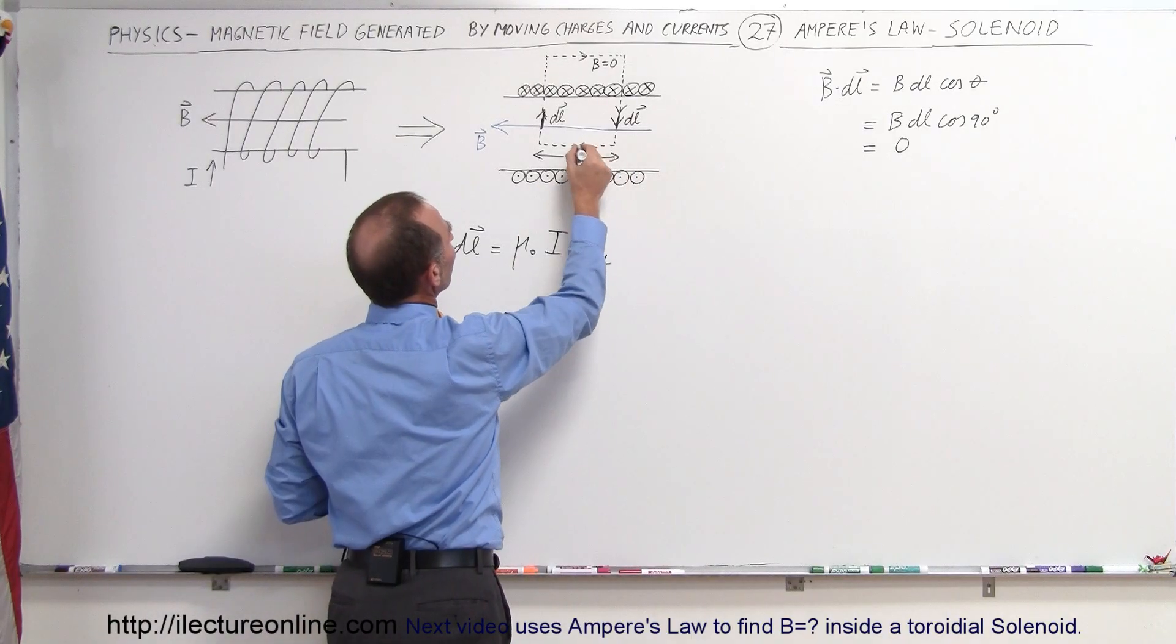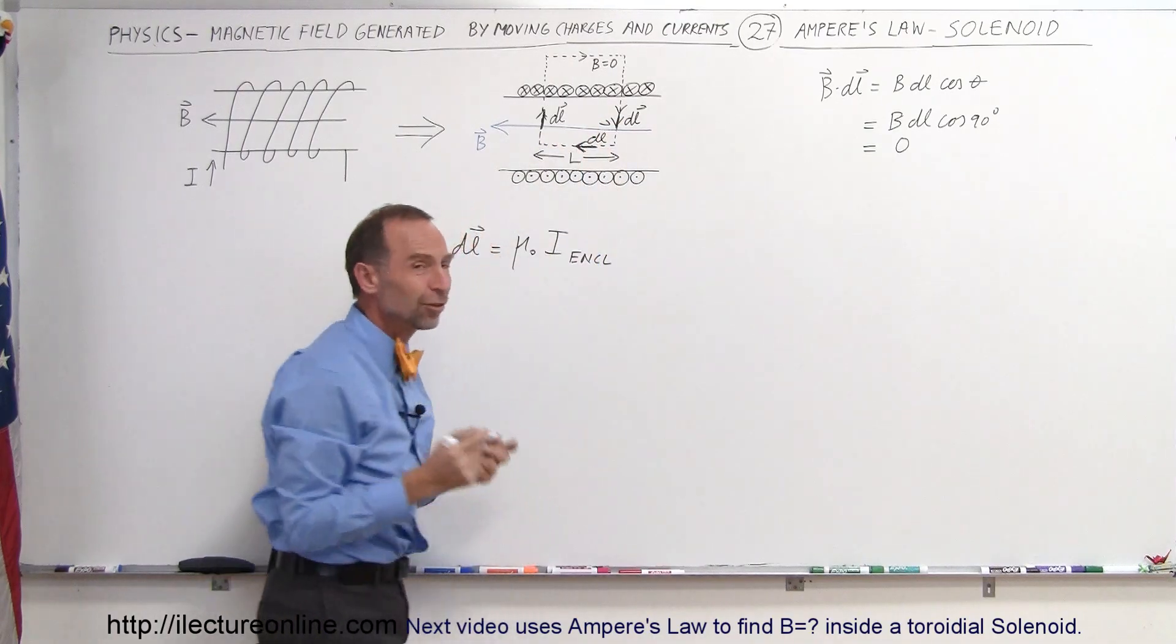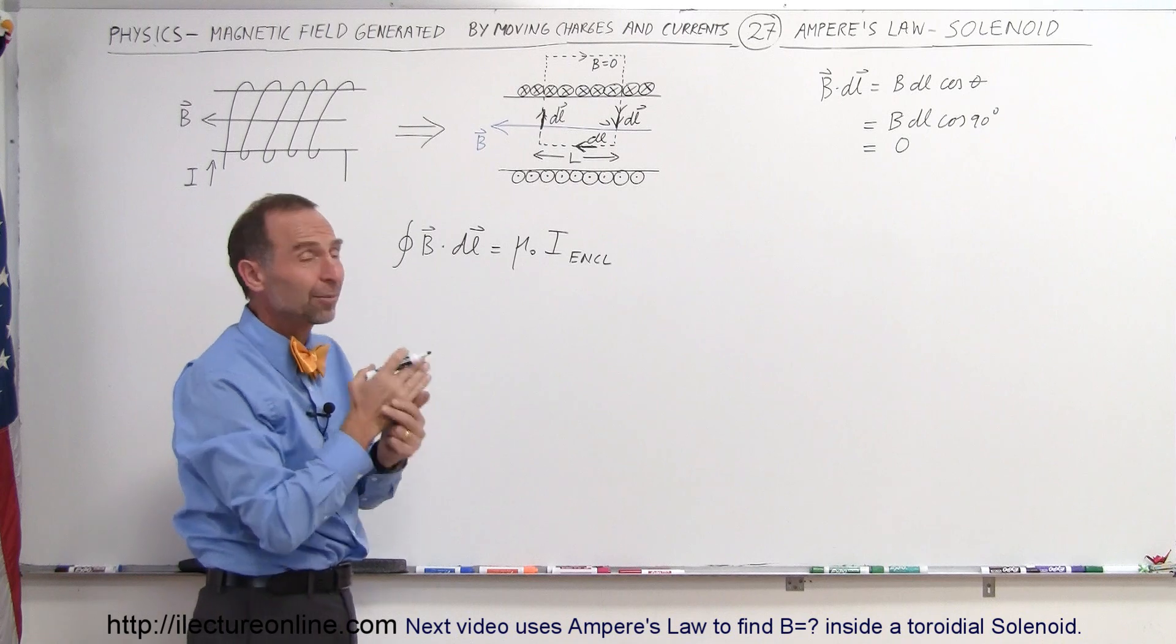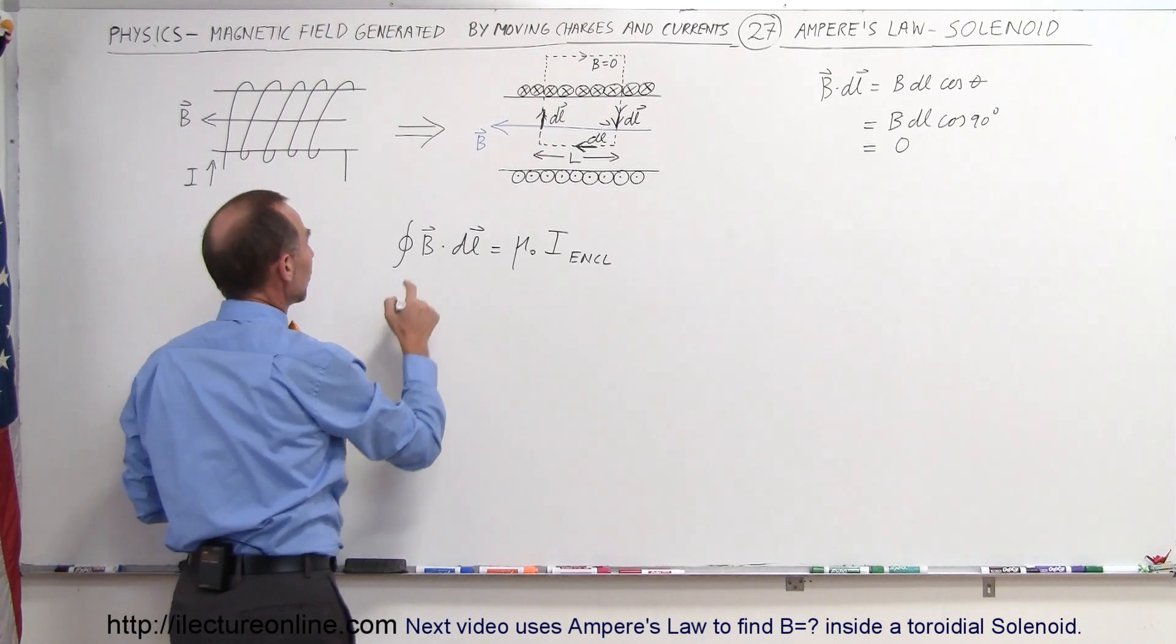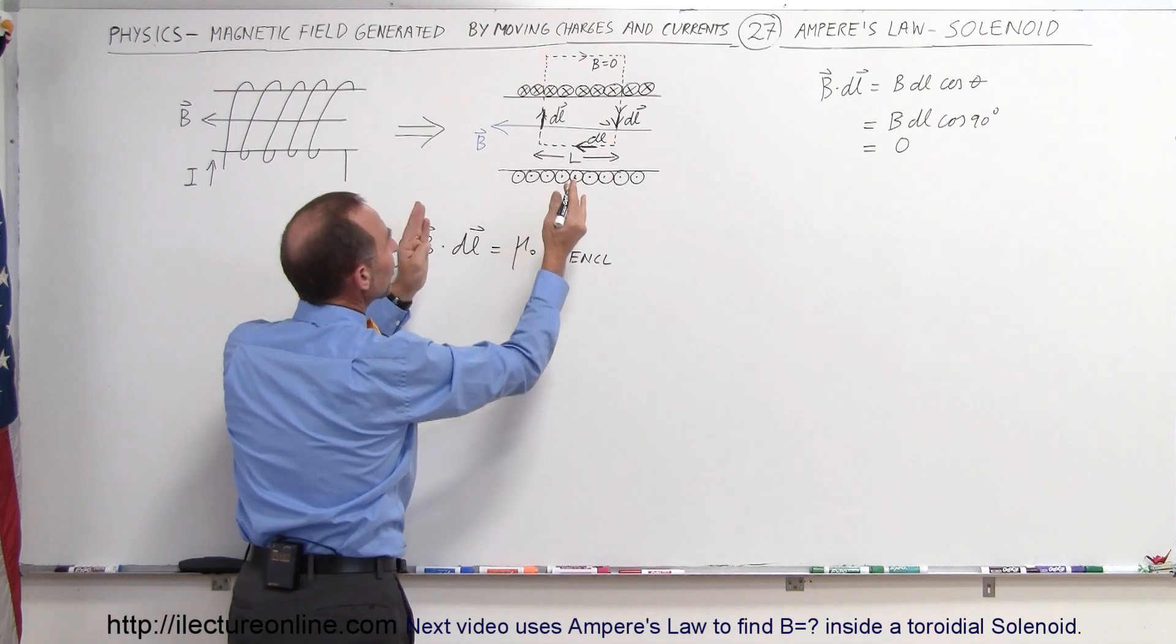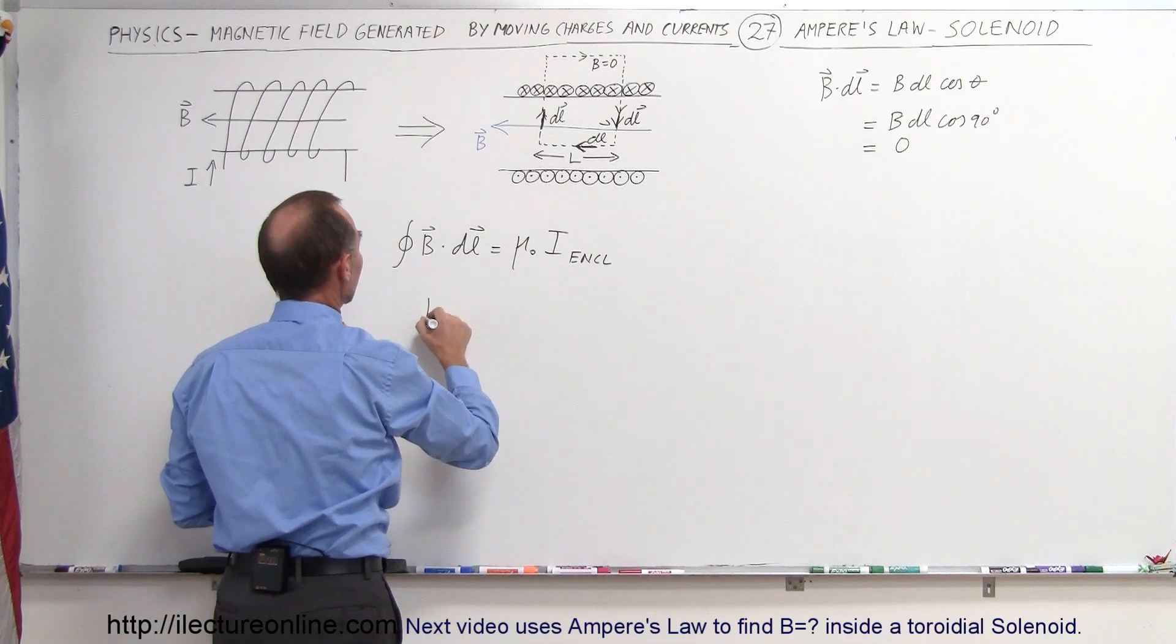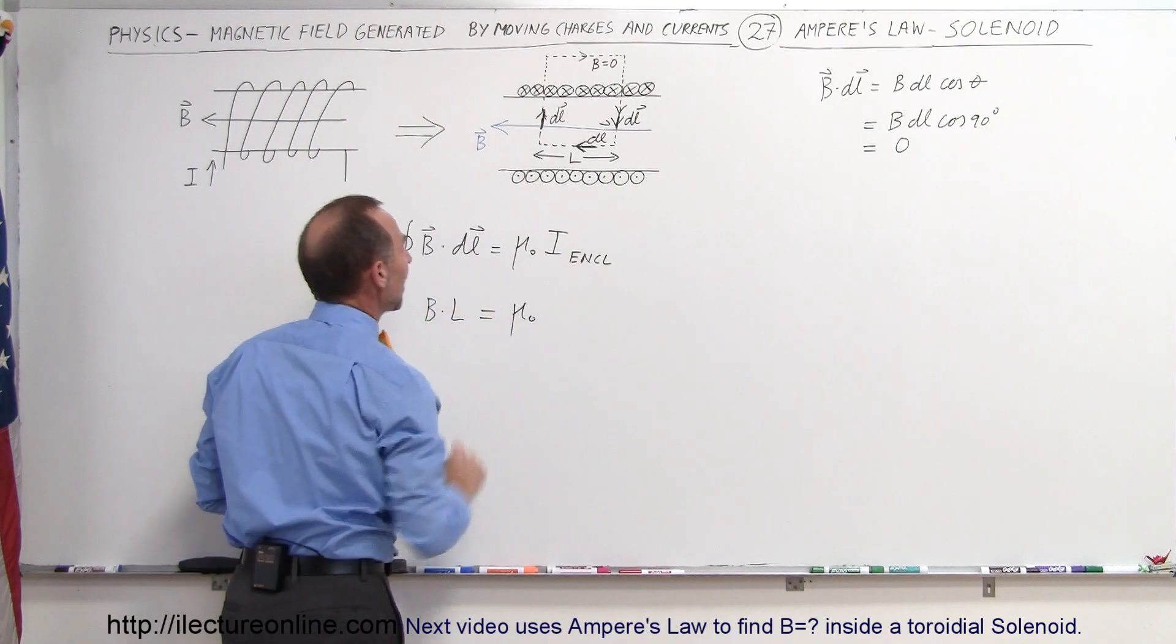Notice if my dL is in this direction, that's in the same direction as the magnetic field. So therefore, B dot dL is B times L times the cosine of zero degrees, which is simply B times dL. So in this case, it's going to be the strength of the magnetic field times the path length L. So that's B times L is equal to μ₀ times I enclosed.